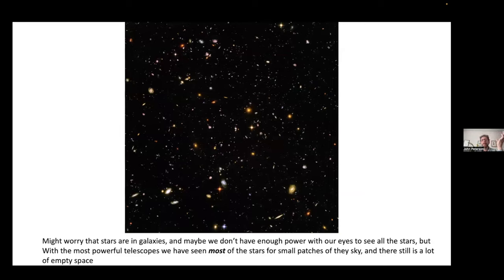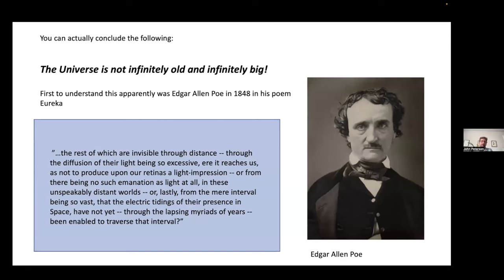You might worry that maybe we can't see all the stars because they're very faint. But here's the Hubble Deep Field — the deepest view of the universe for a tiny, tiny patch of the sky. You see some stars, mostly galaxies (which none of those ancient people knew about), but there's still an enormous amount of black space. In fact, there are definitely more black pixels than pixels of all the galaxies and all the stars combined. So why is this? No one figured this out for a long time. But one guy you might have heard of — Edgar Allan Poe — figured this out in his poem in 1848: the reason the sky is still black was because there wasn't enough time for light to reach us.